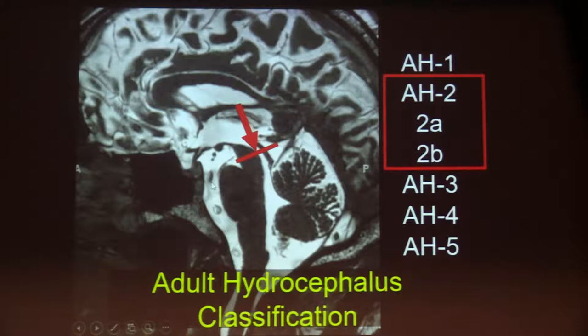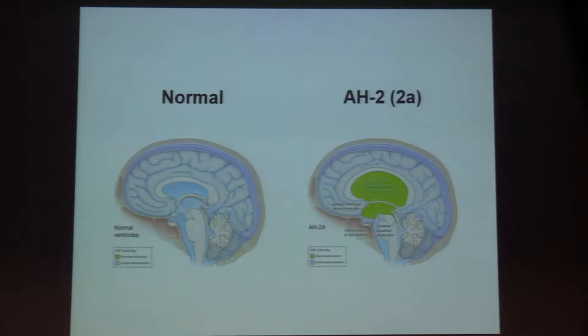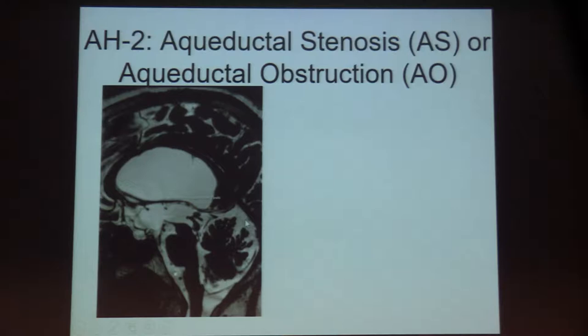Type 2A and 2B cases represent obstruction at the cerebral aqueduct or at the fourth ventricular outflow, respectively. In 2A, there's obstruction at the cerebral aqueduct; in 2B, the obstruction is at the fourth ventricular outflow. These are grouped together for reasons that will become clearer by the end of the talk, as it alters the diagnostic and therapeutic regimen.